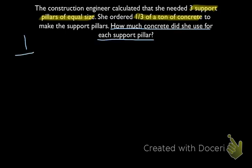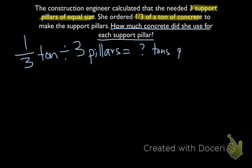As a division equation, that's going to be 1 third for 1 third of a ton of concrete. We're going to divide that equally among three pillars. That's going to tell us how many tons per pillar.